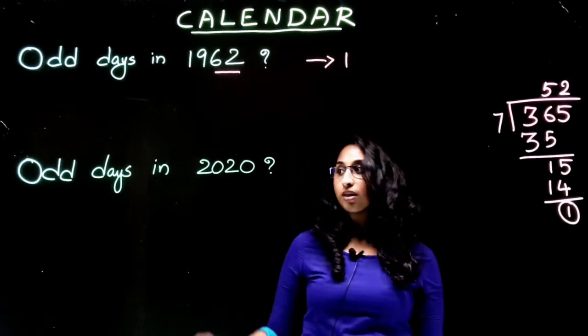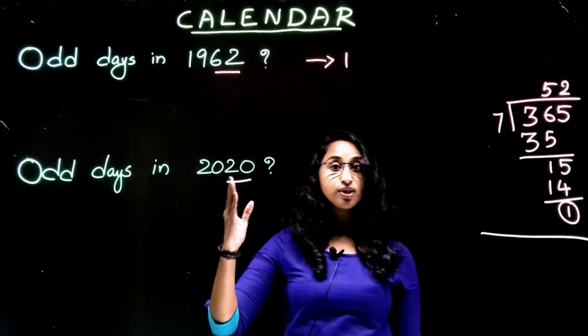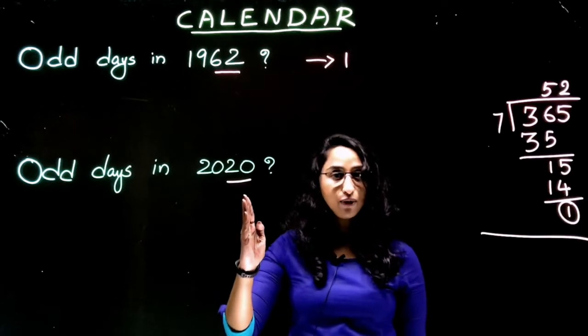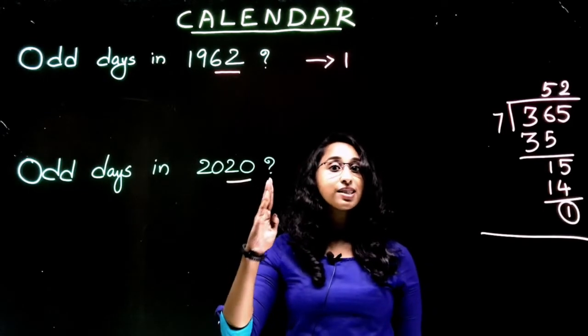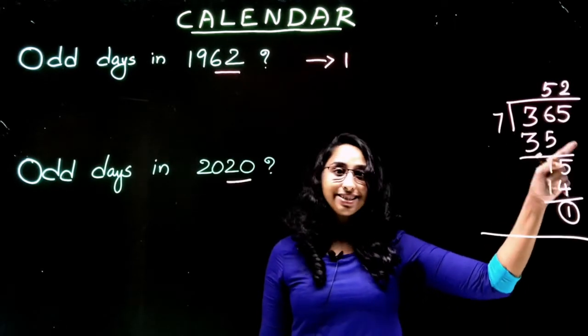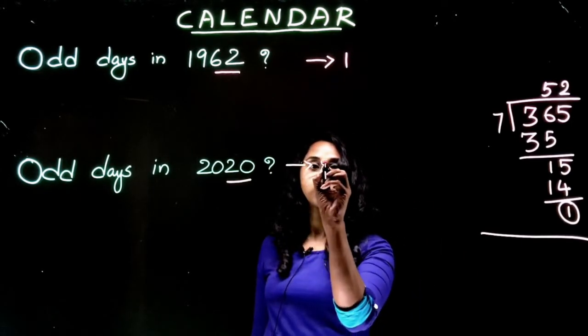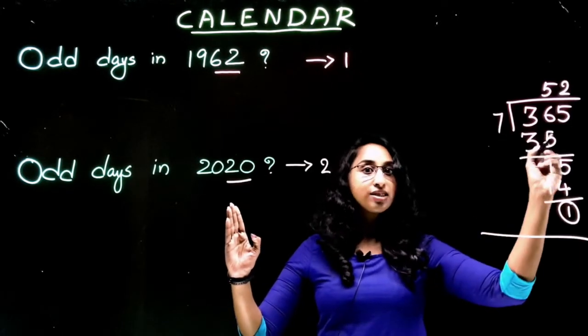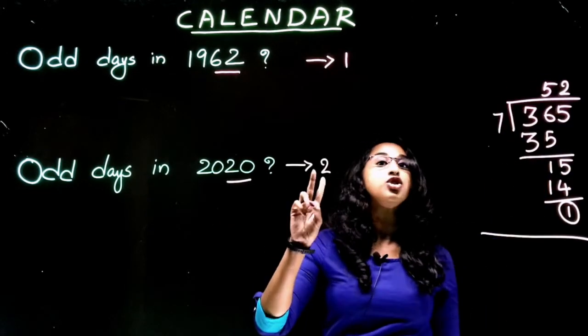Next one: how many odd days in the year 2020? 2020, is it a leap year or non-leap year? 20 is divisible by 4, so it is a leap year. Leap year contains 366 days. 365 has one odd day, so for 366 it will be two odd days. So in all leap years there is 366 days. In that 366 there is 52 weeks plus two odd days.